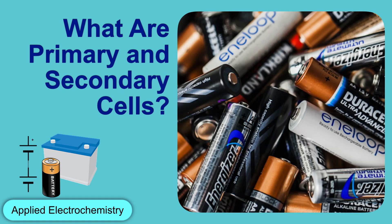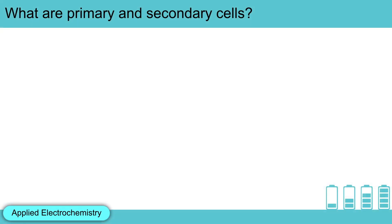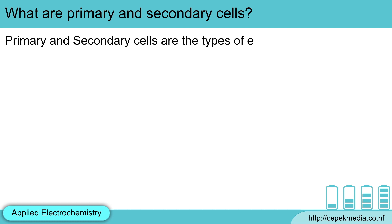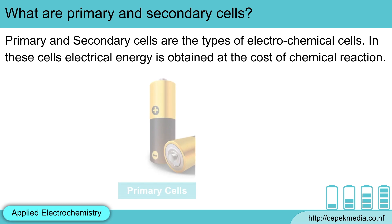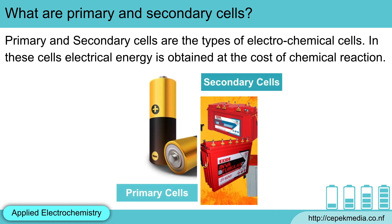Let's start a new series on applied electrochemistry. The first question is: what are primary and secondary cells? You can also get my lecture notes from chepecmedia.co.nf — the link is given in the description. Primary and secondary cells are types of electrochemical cells in which electrical energy is obtained at the cost of chemical reactions. They are of two types: primary cells and secondary cells.